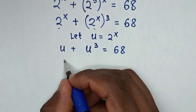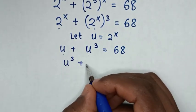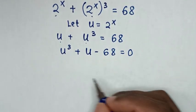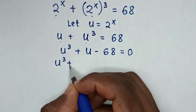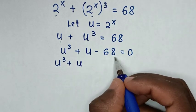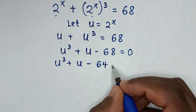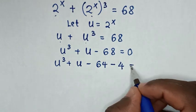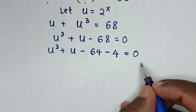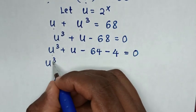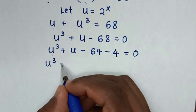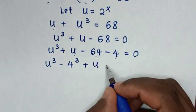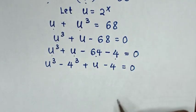Then in the next step, it will be u power 3 plus u minus 68 is equal to 0. Then in the next step, it will be u power 3 plus u minus 68 equals 64 minus 4, because negative 64 plus negative 4 is negative 68, equals 0. Then in the next step, it will be u power 3 plus u minus 4 is equal to 0.